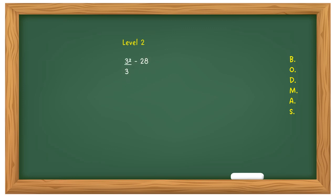Now let's look at some Level 2 problems. In this example with a fraction and a negative number, BODMAS rules still apply. You solve the occurrence first — your odd thing — then divide because divide comes before subtraction. So 3 times 3 is 9, then 9 divided by 3 is 3, then 3 minus 28 — if you know your negative numbers, that's minus 25. Although presented slightly differently from Level 1, the method is just the same — follow the pattern of BODMAS.